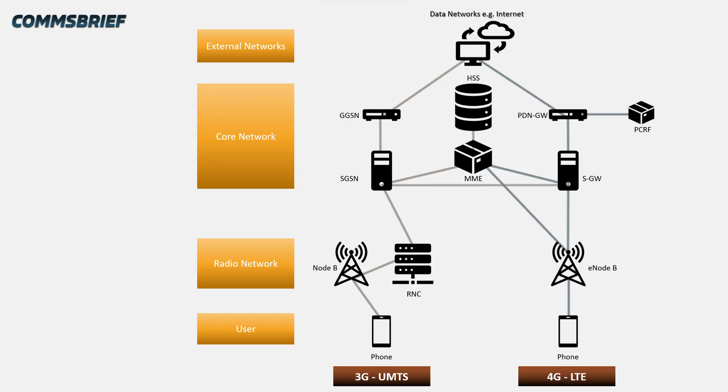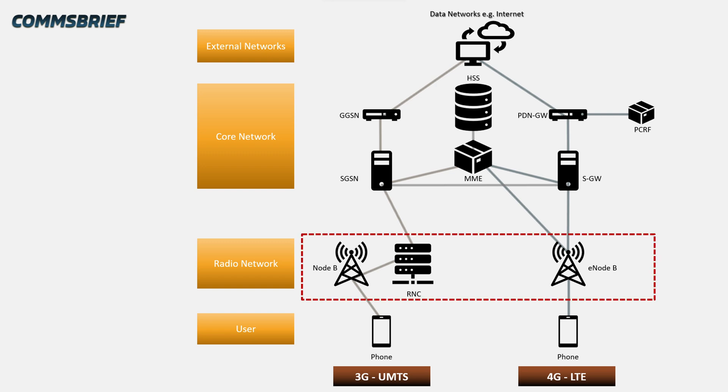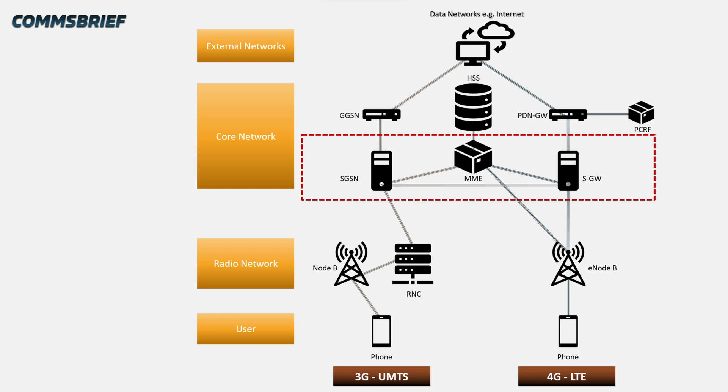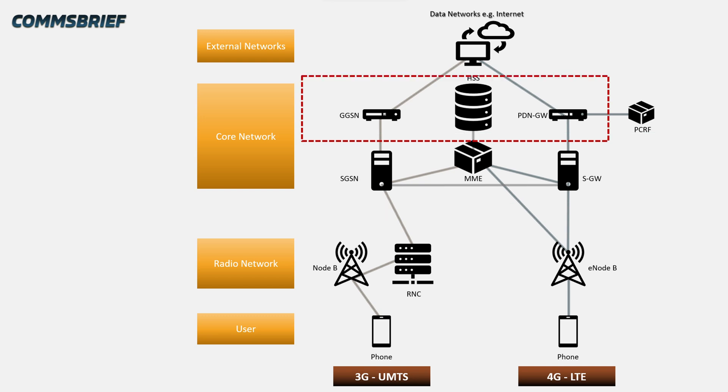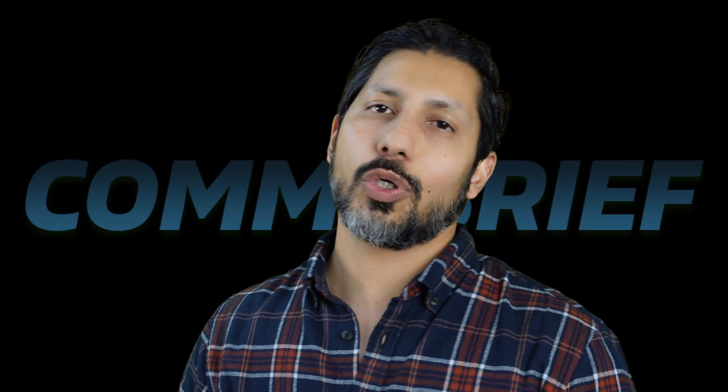Now let's look at a combined architectural view of 3G UMTS and 4G LTE. The eNodeB in 4G is a counterpart of the Node B and RNC combined in 3G. The Serving Gateway (SGW) in 4G is the equivalent of SGSN in 3G — and SGSN and SGW are both connected to the MME and also connected to each other. Finally, the PDN Gateway in 4G is the equivalent of GGSN in 3G.